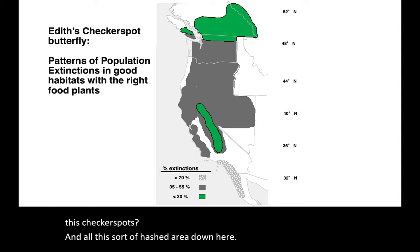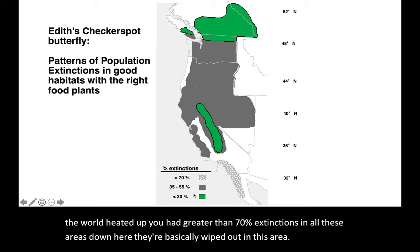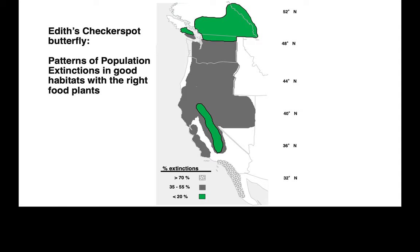Look at this population down here — they were isolated. There's an area which is actually a desert in the middle of California; there were some south of the desert, plenty of them north, but it was too far — the checkerspots couldn't get over. As the world heated up, you had greater than 70% extinctions in all these areas down here. In the dark gray area up here, around half of the populations went completely extinct. In the green areas, only about 20%. Notice where the green areas are — there's a mountain range running right through there, something like the Sierra Nevadas.